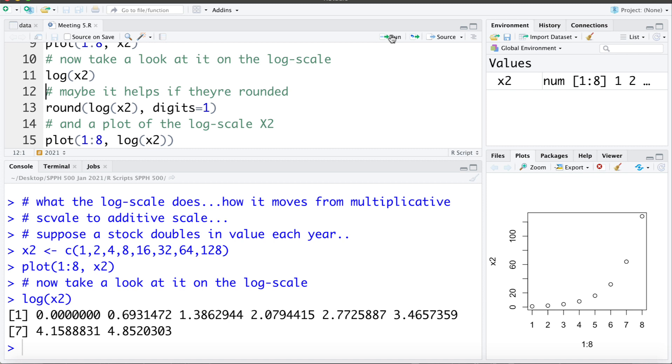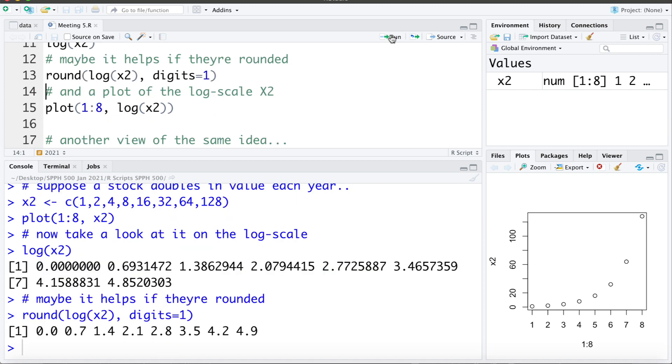And that might be easier to see if we round these values. So I'm going to take the log of x2 and round it to one decimal place. And we can see it's going from 0 up to 0.7, 1.4, 2.1, 2.8 and so on, increasing by the same amount each year.